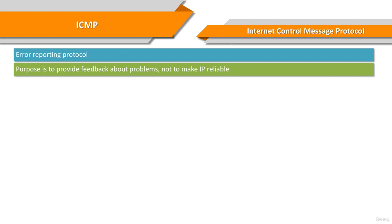There are still no guarantees that a datagram will be delivered or a control message will be returned. Some datagrams may still be undelivered without any report of their loss. The higher-level protocols that use IP must implement their own reliability procedures if reliable communication is required.